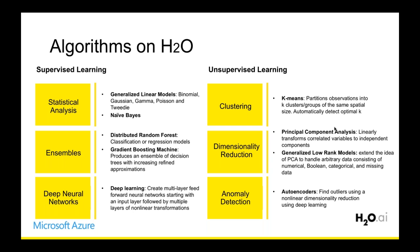H2O supports a wide variety of supervised and unsupervised algorithms. On the supervised side: GLM, GBM, Random Forest. On the unsupervised side: K-Means, PCA, and GLRM — an extension of PCA that handles numeric, categorical, and missing values. We also have anomaly detection using autoencoders and a strong multi-layer feedforward neural network deep learning implementation. Each algorithm is fully parallelized, distributed, and fully featured, with close to 40 tuning parameters per algorithm.